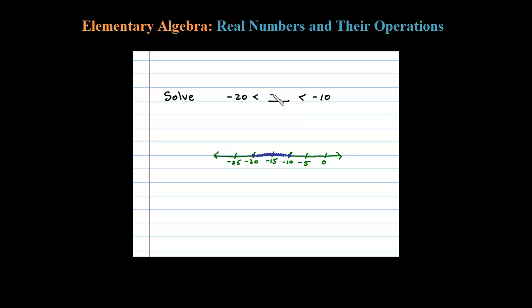Let's go with negative 15. Another way to think of this is that negative 20 is less than negative 15, and at the same time, negative 15 is less than negative 10.